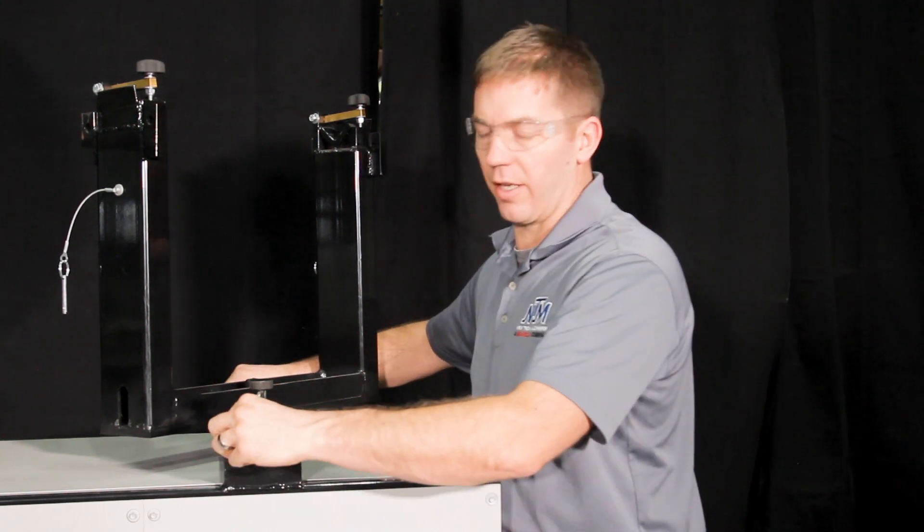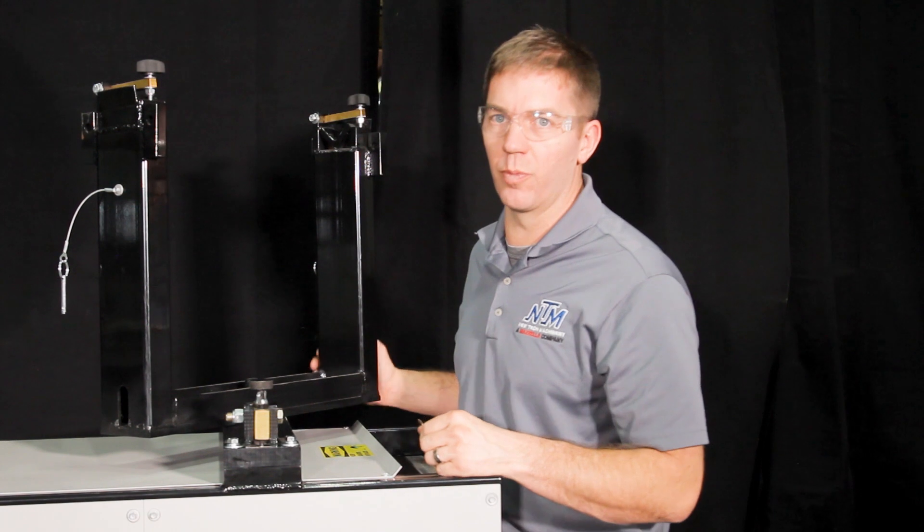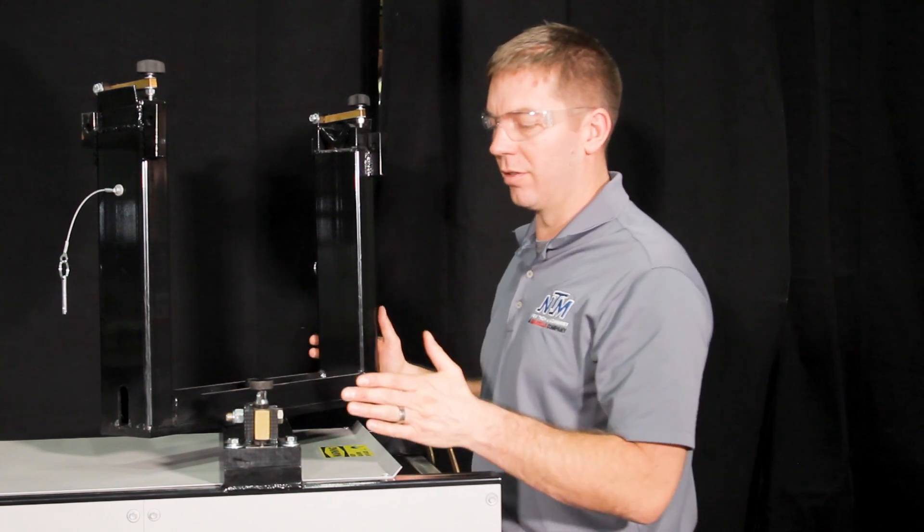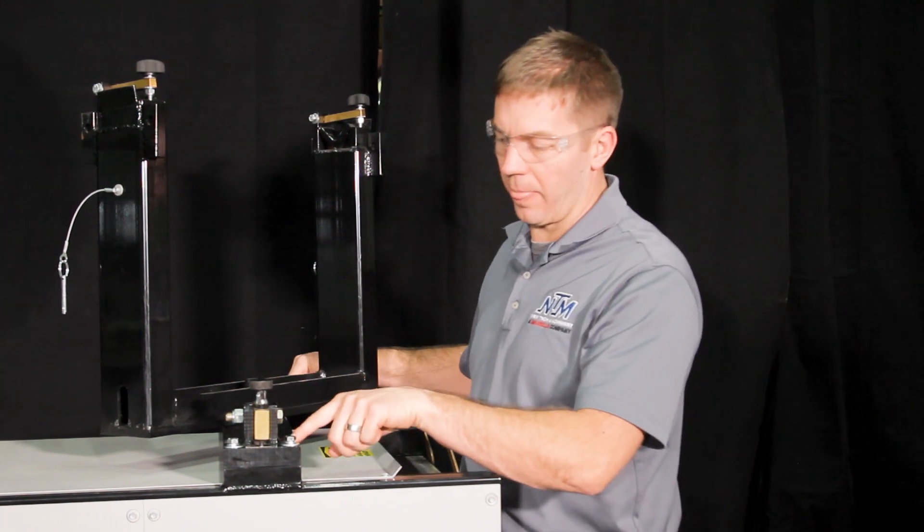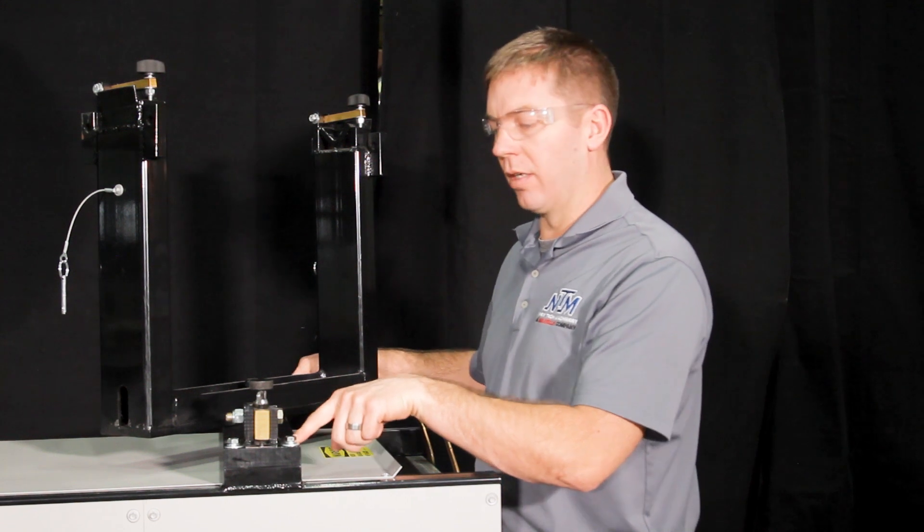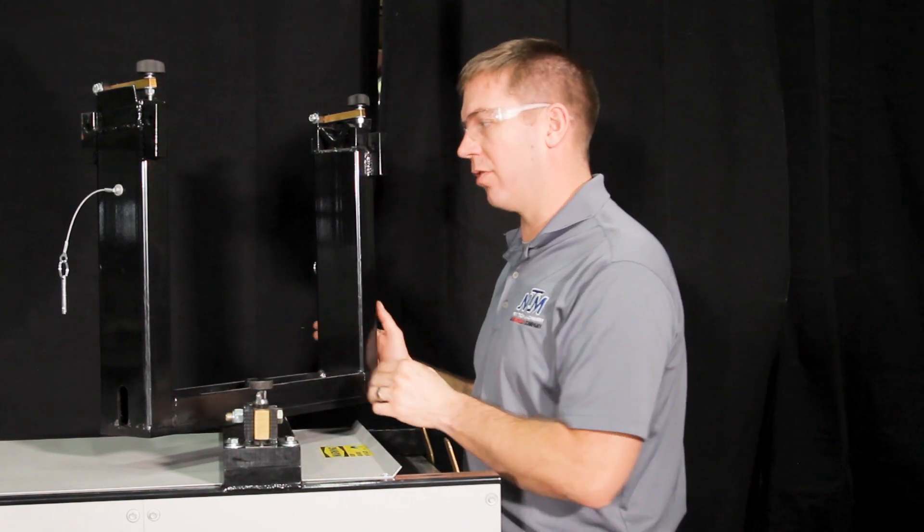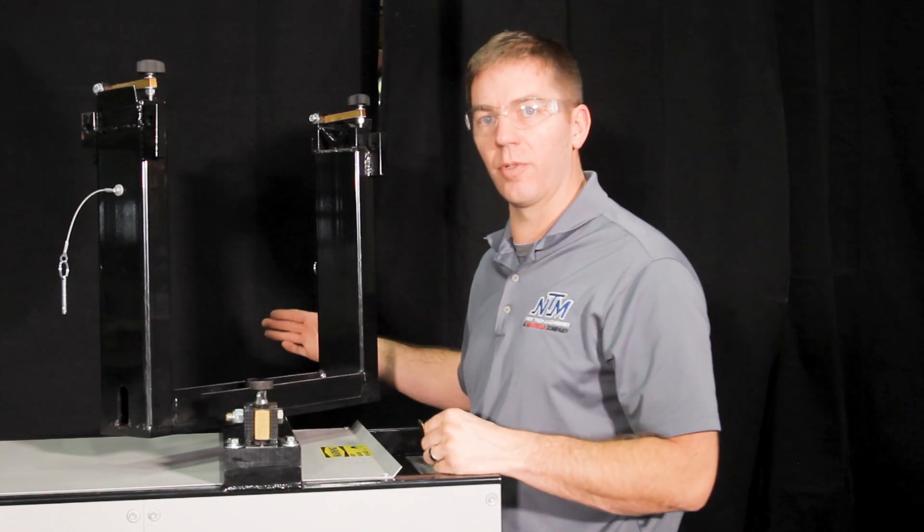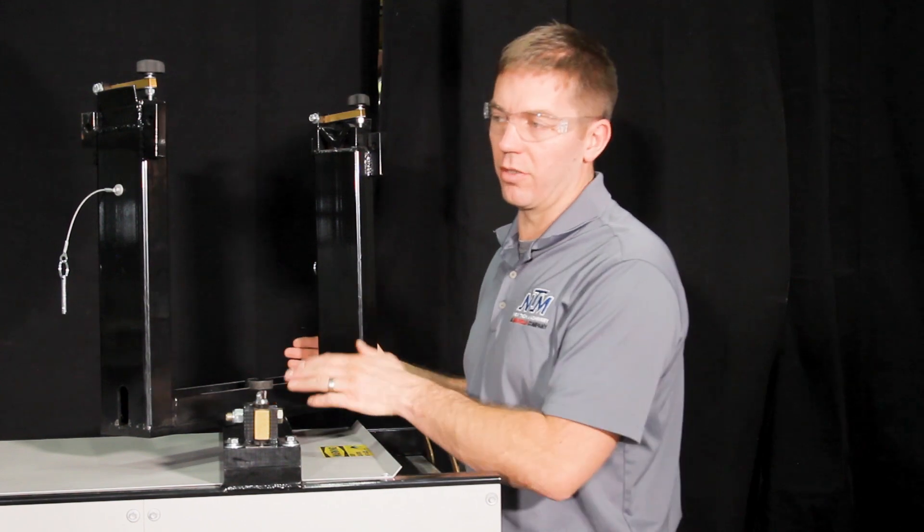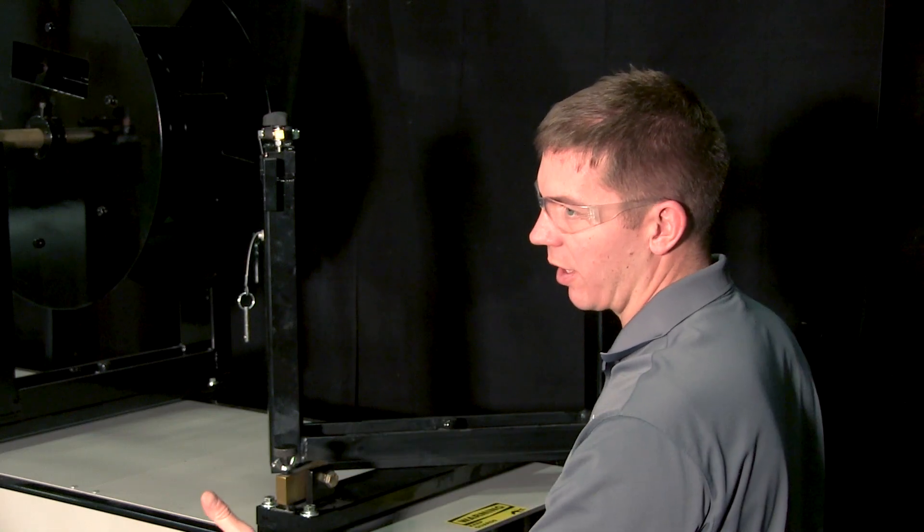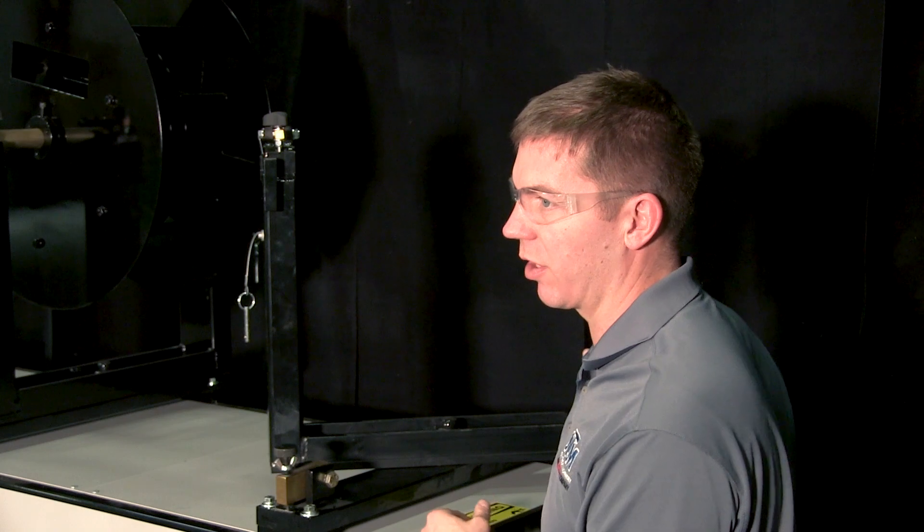Before you tighten these fasteners into place there are two positions for the turnstile and you'll notice that the holes are slotted. The turnstile all the way to the right side of the gutter machine that's for five inch. The turnstile slid all the way to the left side of the machine that would be for six inch gutters.